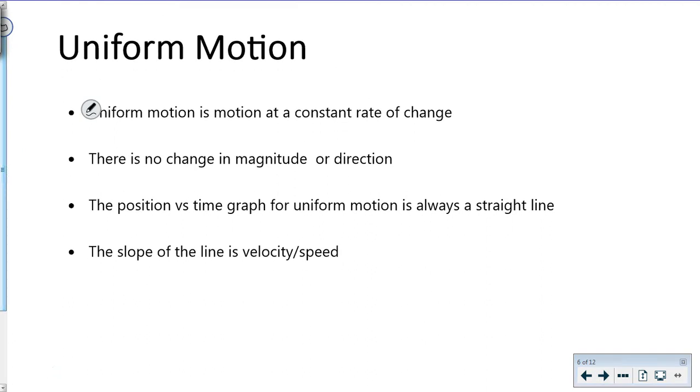Uniform motion is motion at a constant rate of change with no change in magnitude or direction. The position-time graph for uniform motion is always a straight line. If it's not straight, it's non-uniform. The slope of our distance-time graph is our velocity or speed, depending on what you started with—distance gives you speed, position gives you velocity.